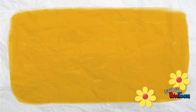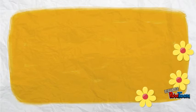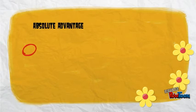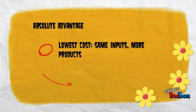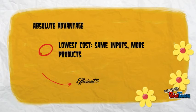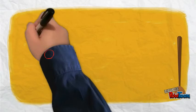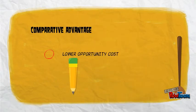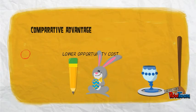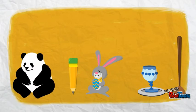There are two ways to compare the ability of two people in producing goods. The person who can produce goods with a smaller quantity of inputs is said to have an absolute advantage in producing the goods. The person who has the smaller opportunity cost of producing the goods is said to have a comparative advantage.